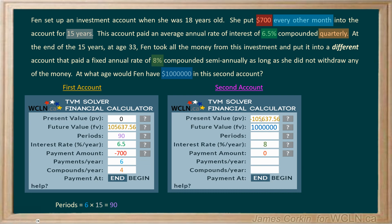For the payments per year field in the WCLN calculator: when you don't make payments, you might think this should be zero, but for the calculator to work properly you must enter a one. You can think of that one as representing the single lump sum that was deposited. If you enter zero, the calculator won't work — you can never have zero for payments per year. Finally, compounding is semi-annually, which means twice a year, so we enter two.